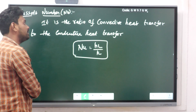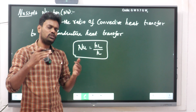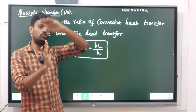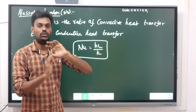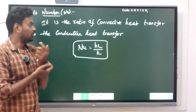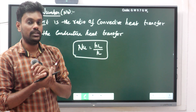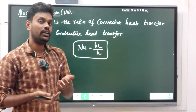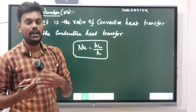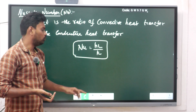The Nusselt number is the ratio of convective heat transfer to conductive heat transfer. When fluid flows over a plate, heat transfers through conduction first, then through convection to the outside. The ratio between these two is the Nusselt number. The formula is Nu = h·l / k. This formula is important — in numerical problems, if asked to find the Nusselt number, this direct formula is used.